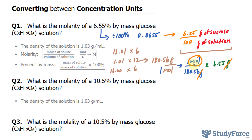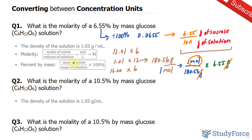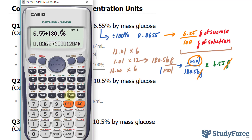The reason why we want the moles of glucose is because the formula for molarity, as discussed at the beginning, is moles per liter. So using my calculator, 6.55 divided by 180.56, we end up with 0.03627.